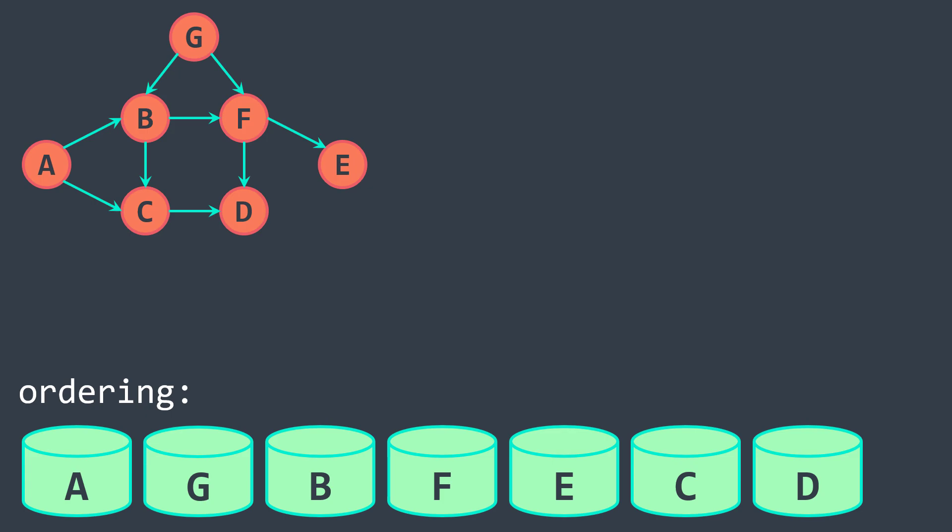Before moving to the code, let me just tell you why topological sort works on directed acyclic graphs only. A graph that has cycles can't have a topological order. Because for example, for this cycle,